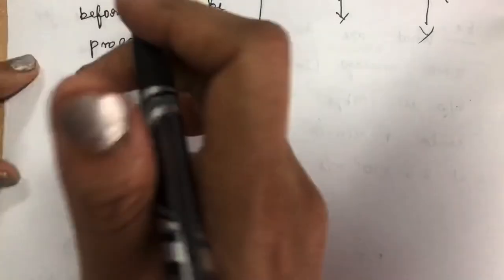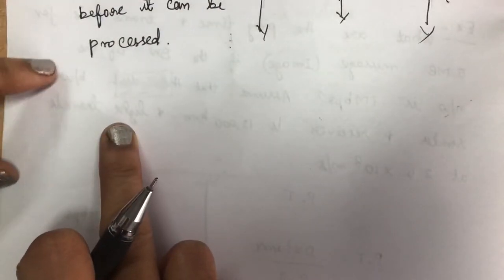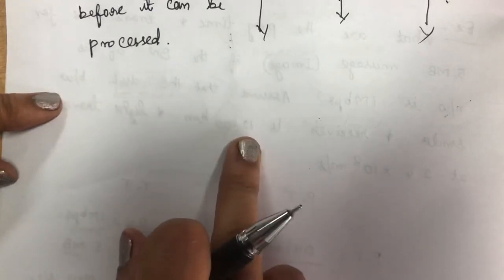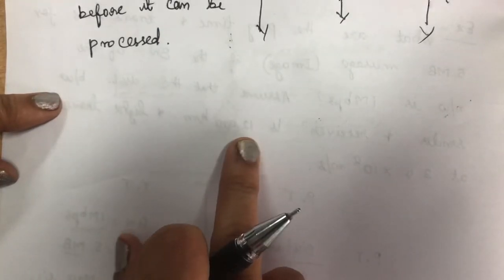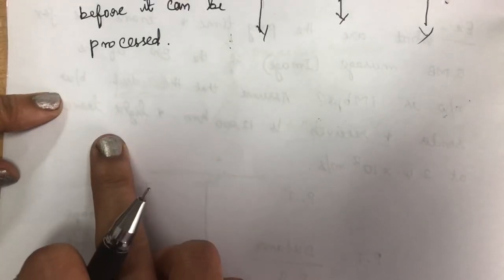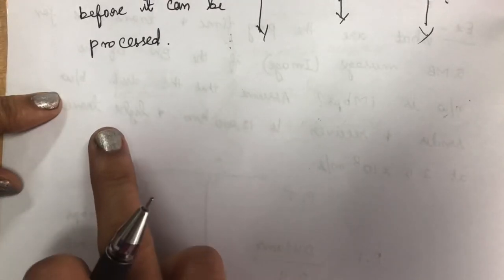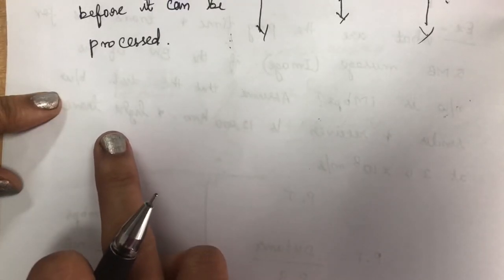The fourth component is processing delay — the delay that happens during propagation time. Using all four components, we can easily calculate the total latency.